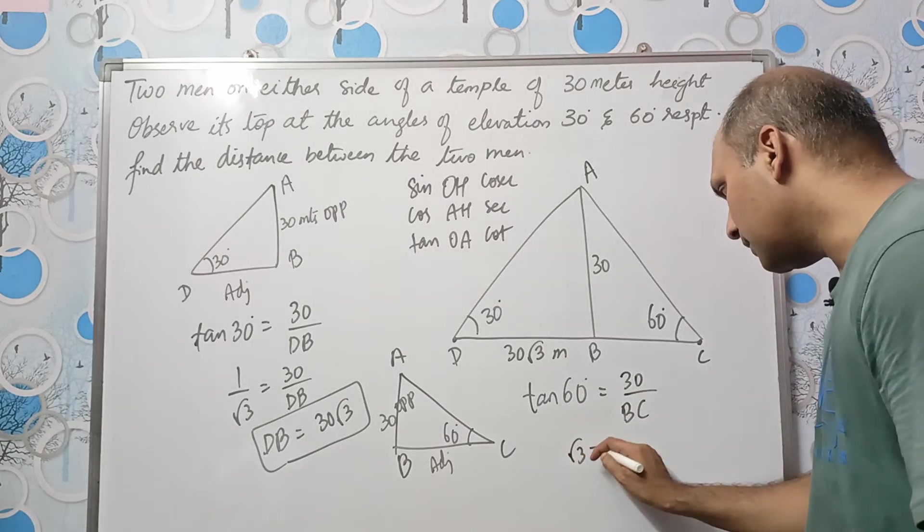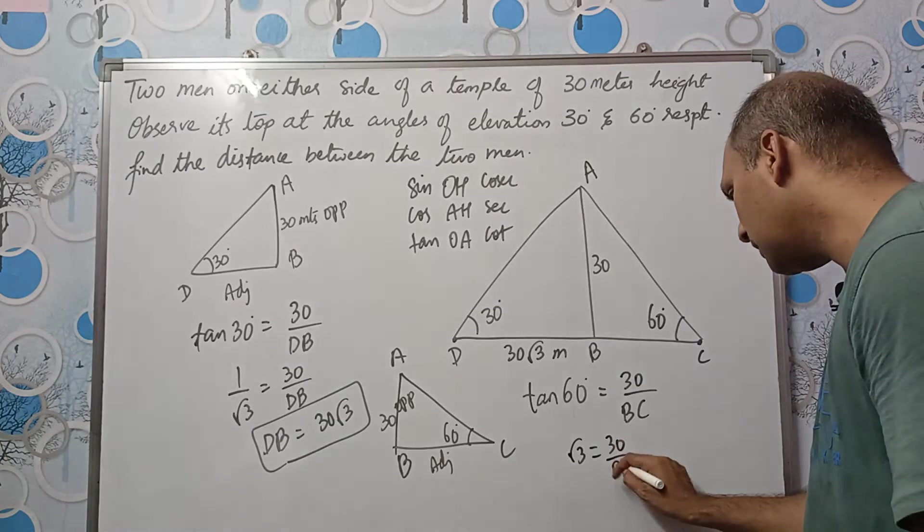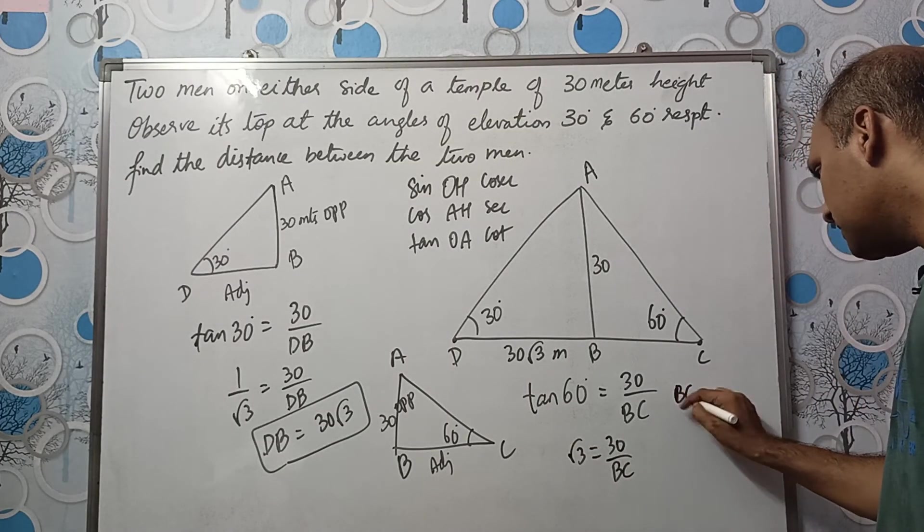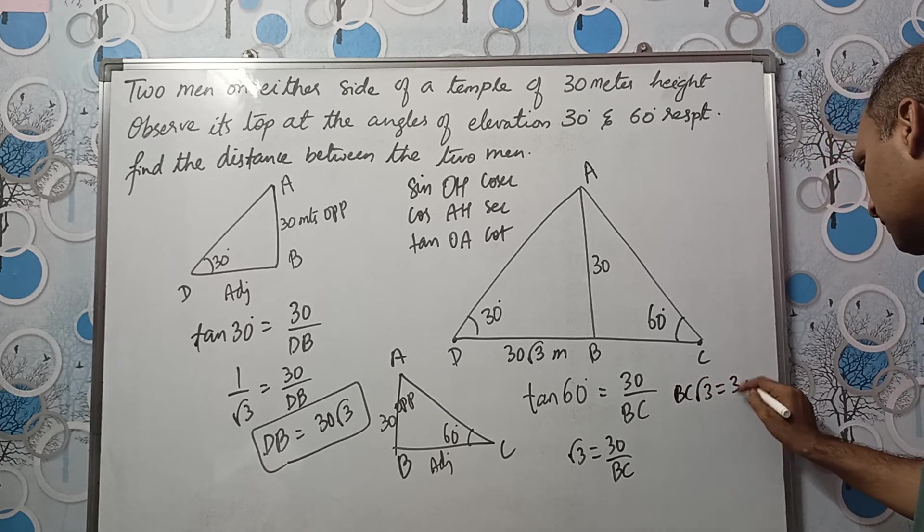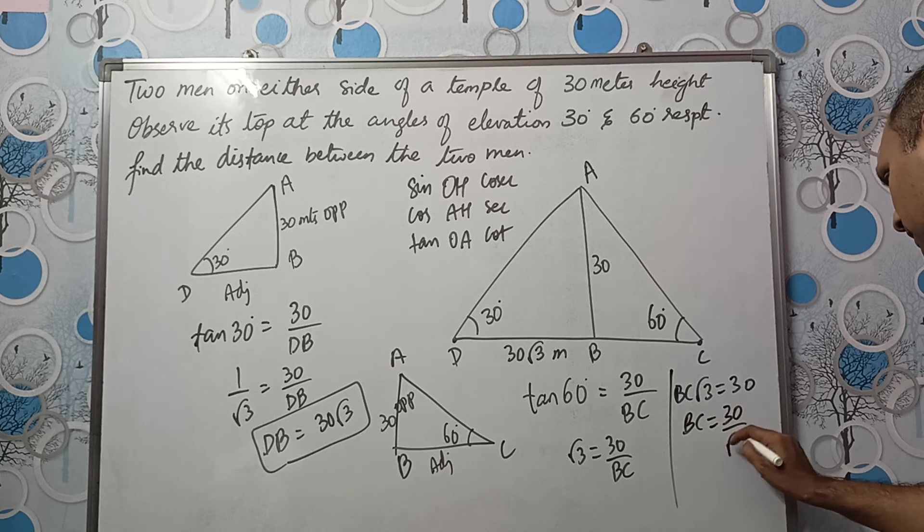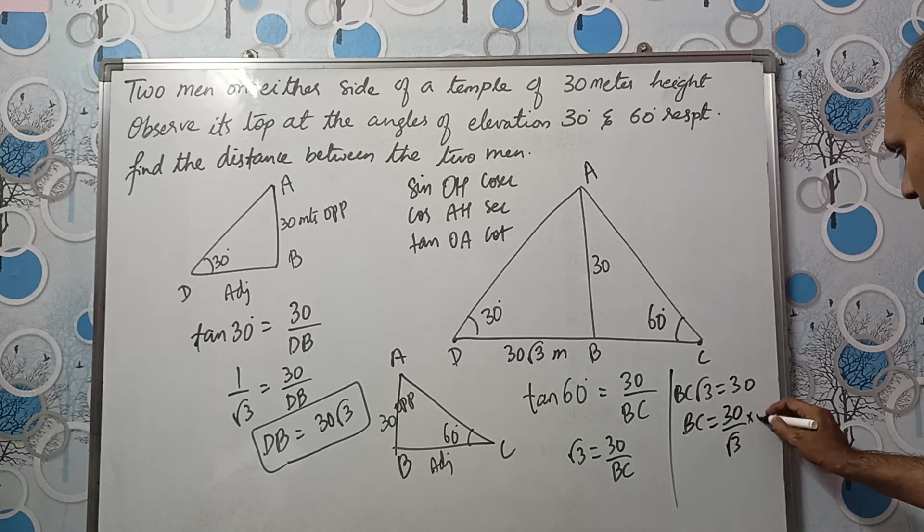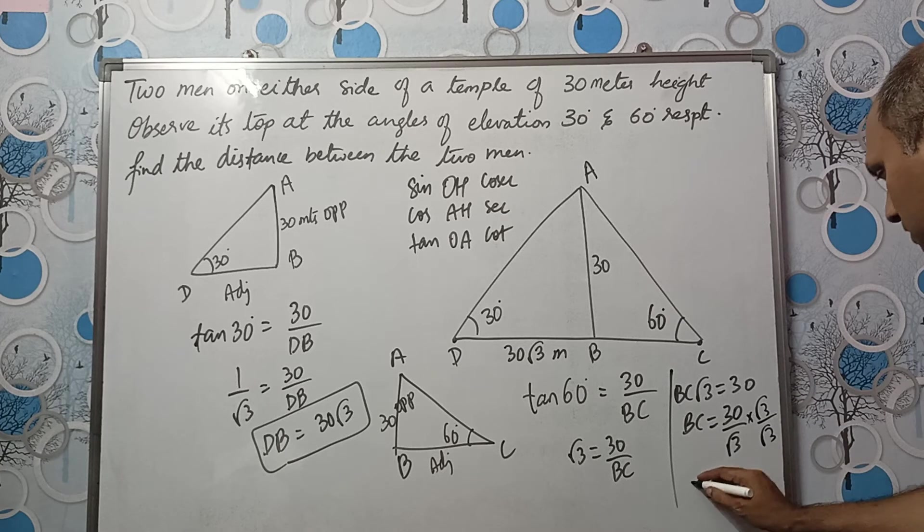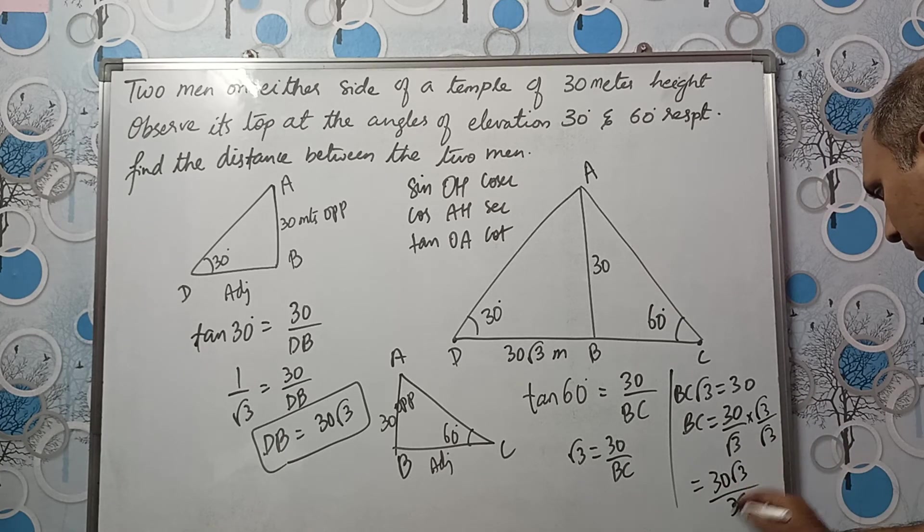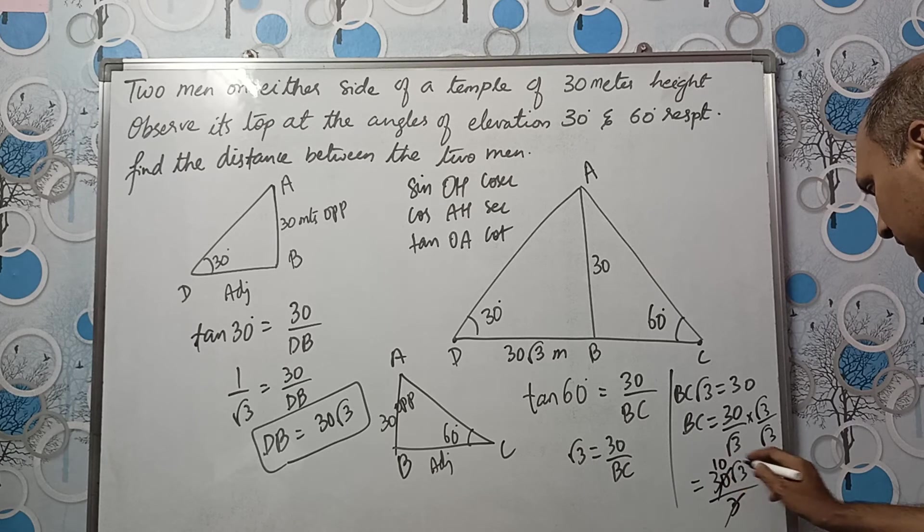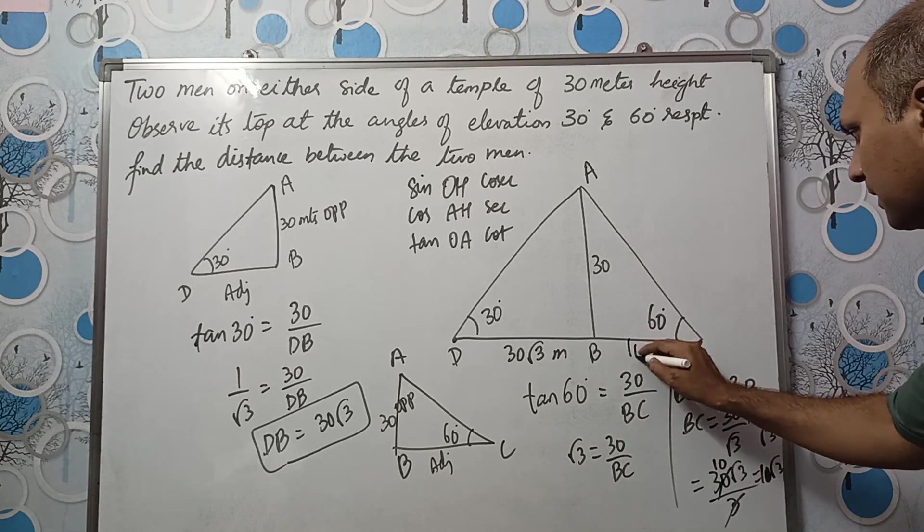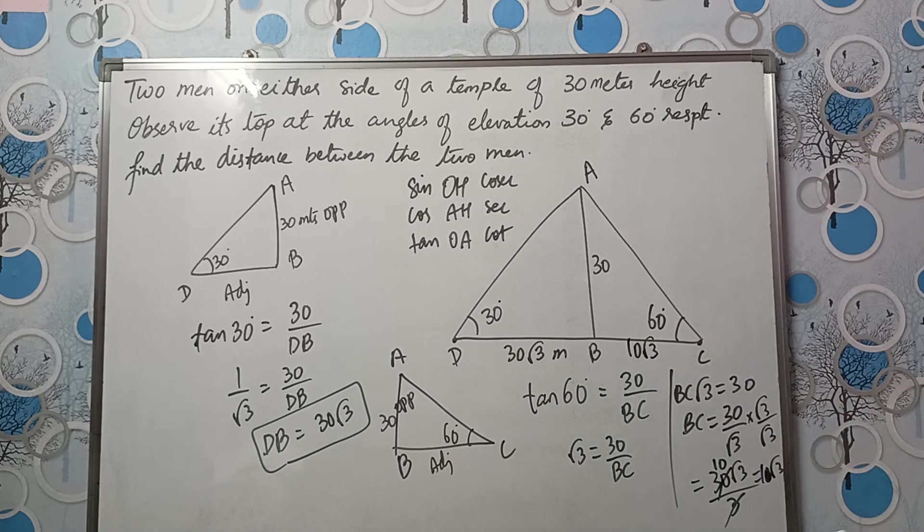Tan 60 is root 3. So this is 30 by BC. If you cross multiply it will be BC root 3 is equal to 30, or BC will be equal to 30 divided by root 3. We have root 3 in the denominator which means we need to rationalize this. So that it becomes 30 root 3 divided by root 3 into root 3 is 3. So this will get cancelled, it will be 10 root 3.